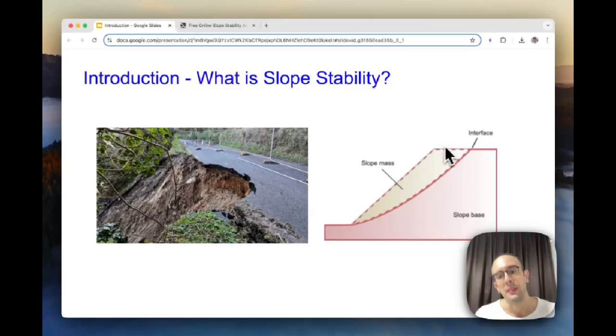And then what you have in reality is you have this failure envelope where it's like a surface along which all the ground has failed and fallen away from. So what we do as geotechnical engineers is we look at lots of different planes through this slope. And one of these planes will be the critical face. That's typically the ground which has the lowest factor of safety when you're looking at the stability of it.